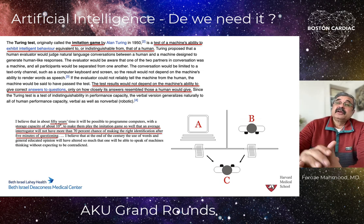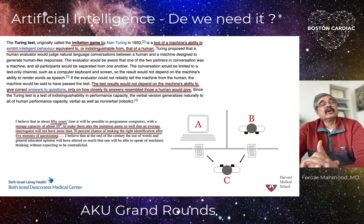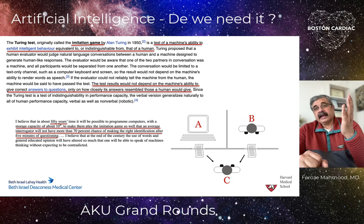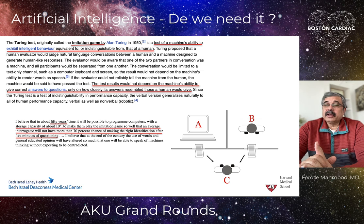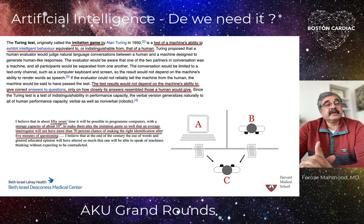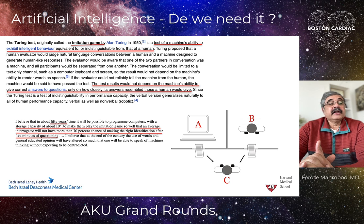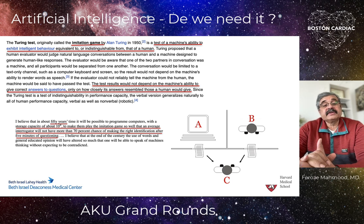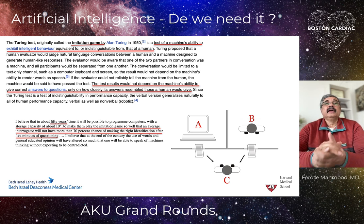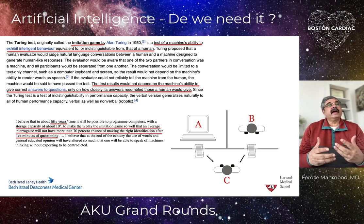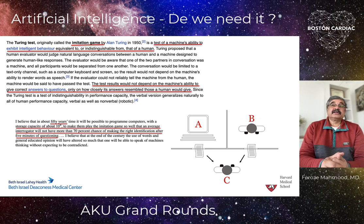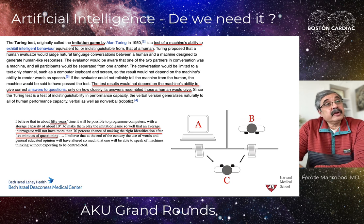This is, to this day, one of the gold standards for analyzing the quality of artificial intelligence. Turing hypothesized that in 50 years it would be possible to have an extremely powerful machine play the imitation game so well that the average interrogator would have no more than a 70% chance of making the right identification. Based on the quality of data and training, he believed it would become extremely difficult to tell whether you were talking to a human or a machine.